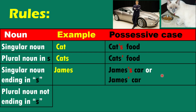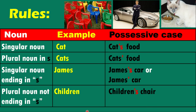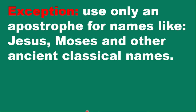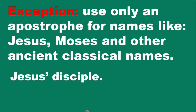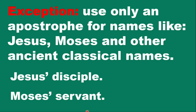For a plural noun not ending in s — we have irregular plurals — for instance 'children' is the plural of 'child' and there is no s here. In this case you should use apostrophe-s: children's chair. There is also an exception: use only an apostrophe for names like Jesus, Moses, and other ancient or classical names — Jesus' disciples, Moses' servant.